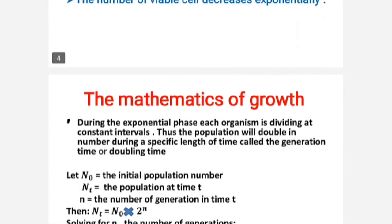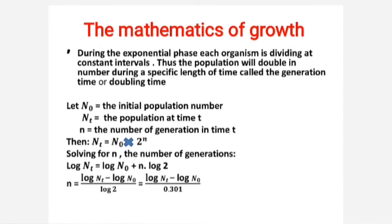Now let us see the mathematics of growth. During the log or exponential phase, each organism divides at a constant rate, and the population doubles in a specific length of time called generation time or doubling time. If n₀ is the initial population, nₜ is the population at time t, and n is the number of generations in time t, then: nₜ = n₀ × 2ⁿ. Solving for n (number of generations): n = (log nₜ − log n₀) / log 2 = (log nₜ − log n₀) / 0.301. This formula is very important as many numerical problems are based on it.